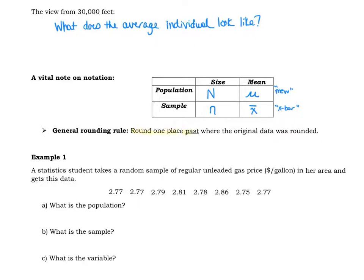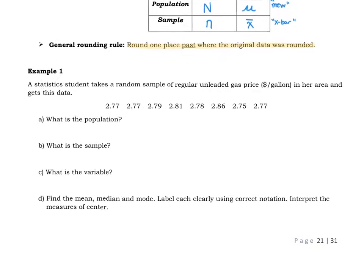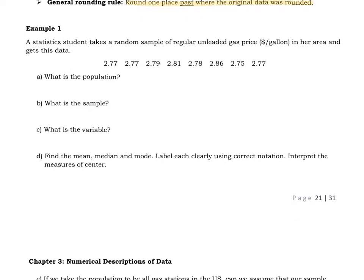So go one decimal place past as our general guideline, again unless specified otherwise. A student takes a random sample of regular unleaded gas prices, price per gallon in her area, and gets the following information. First thing, what is the population?